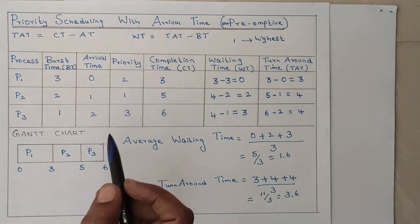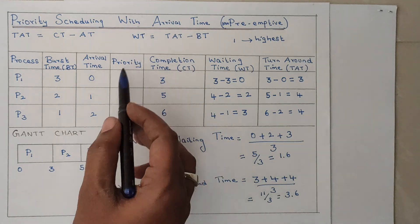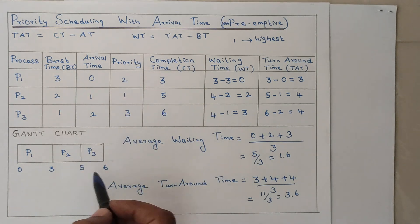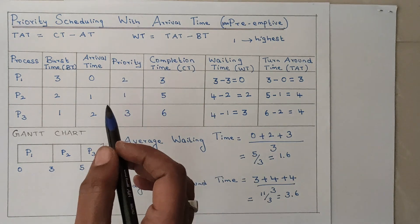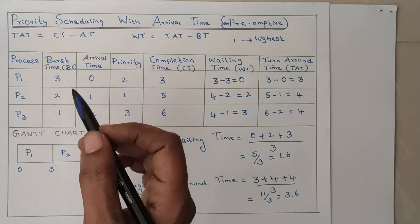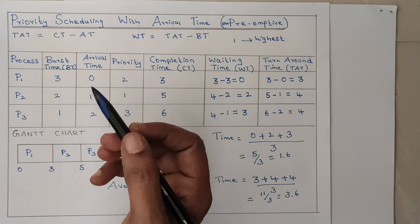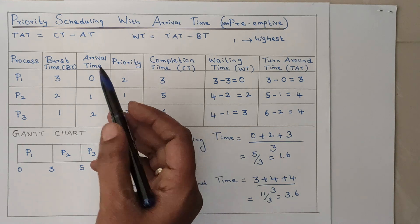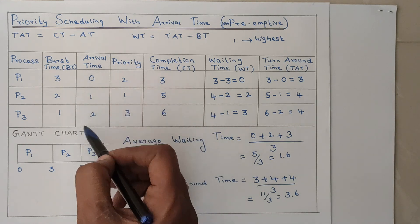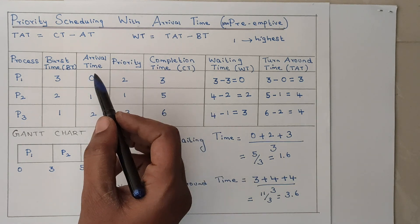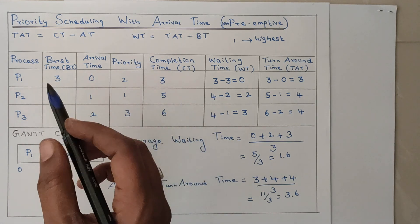Without arrival time, the Gantt chart is drawn purely based on priority. Here, foremost importance is given to arrival time. Thank you all.